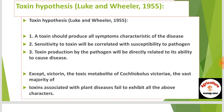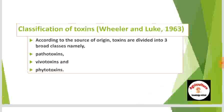Except for victorin — the toxin metabolite of Cochliobolus victoriae — the vast majority of toxins associated with plant diseases fail to exhibit all the above characteristics. Victorin does not follow these three criteria, so victorin is considered the exception to the toxin definition. Moving on to the classification of toxins, Wheeler and Lock in 1963 classified toxins according to their source of origin.